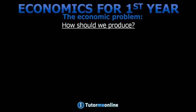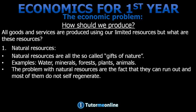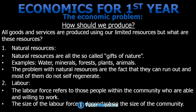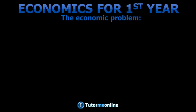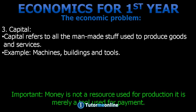How should we produce? All goods and services are produced using our limited resources. Firstly we have natural resources — the so-called gifts of nature, for example water, minerals and animals. The problem with natural resources is that they can run out, and most of them do not self-regenerate. Secondly we have labor — the labor force refers to those people within the community who are able and willing to work, and the size of the labor force is dependent on the size of the community. Capital refers to all the man-made stuff used to produce goods and services, for example machines, buildings and tools. Important to note: money is not a resource used for production — it is merely a tool used for payment.